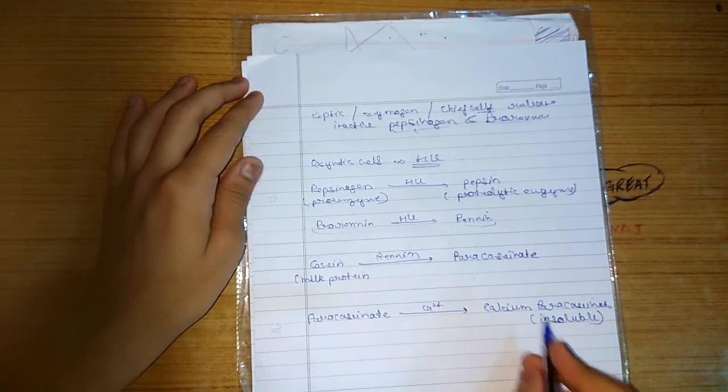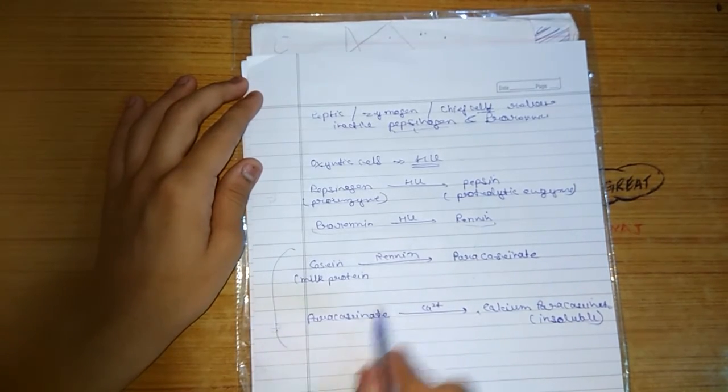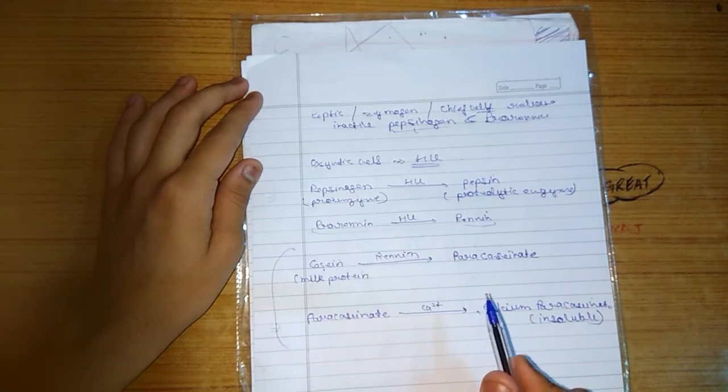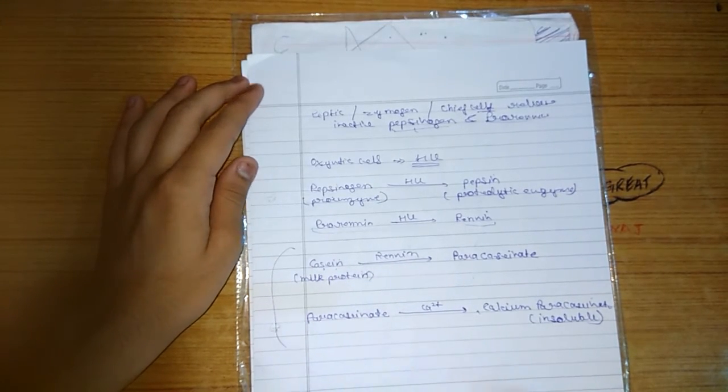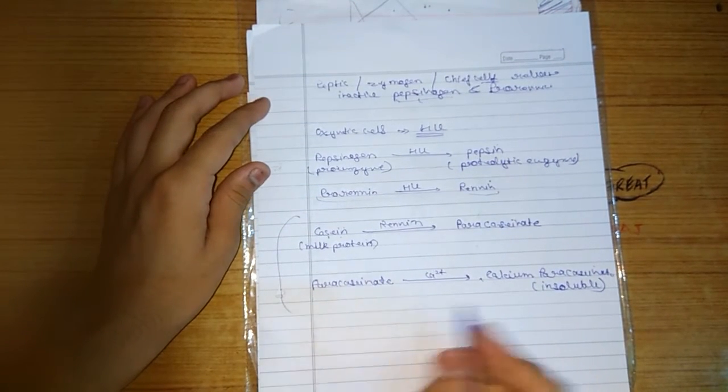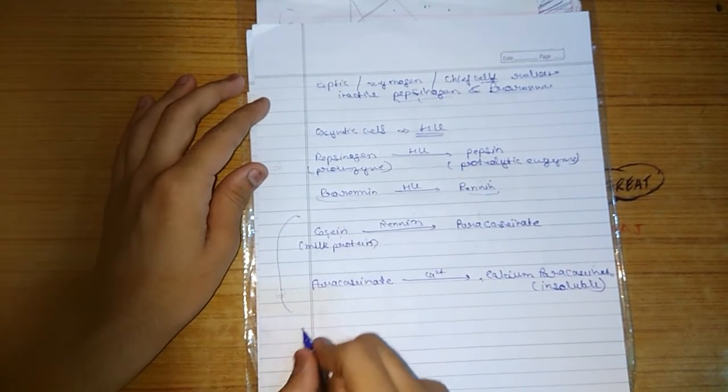So this is the work of the renin enzyme that converts the casein protein into the paracaseinate. And further, pepsin enzymes work on this calcium paracaseinate.